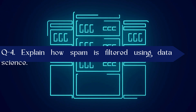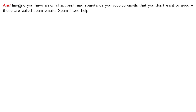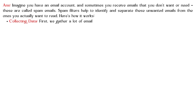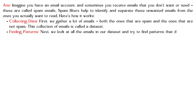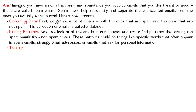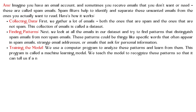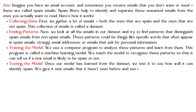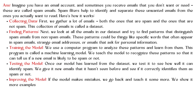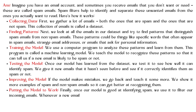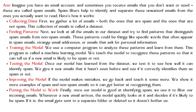Explain how spam is filtered using data science. Imagine you have an email account and sometimes you receive emails you don't want — these are called spam emails. Spam filters help to identify and separate unwanted emails from the ones you actually want to read. First, we gather a lot of emails — both spam and non-spam — called a dataset. Next, we look at the emails and find patterns that distinguish spam from non-spam emails, such as specific words that often appear in spam emails, strange email addresses, or emails that ask for personal information.